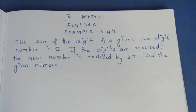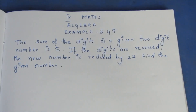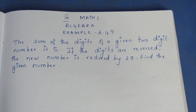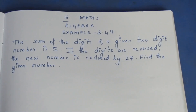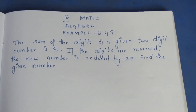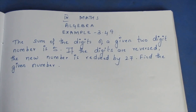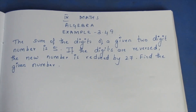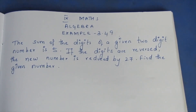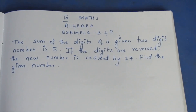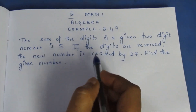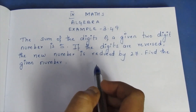Hello viewers, I am Maitley. In Ignite Max Algebra Example 3.49. The sum of the digits of a given two-digit number is 5. If the digits are reversed, the new number is reduced by 27. Find the given number. In this question, it can be confusing or difficult if you encounter any word problem.